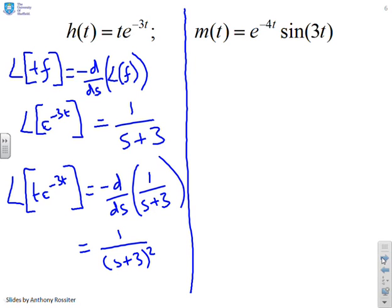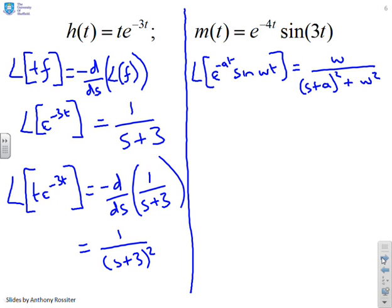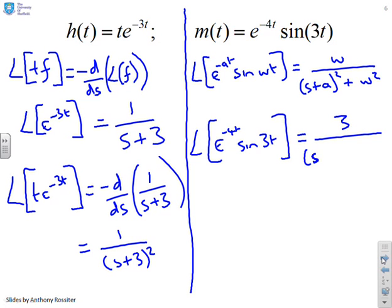What about the next example then? Now you'll notice that we have Laplace of e to the minus at sine omega t gives you omega over (s plus a) squared plus omega squared. So that's what the table gives us and now all I need to do is recognize that in this case a is 4 and omega is 3. So Laplace of e to the minus 4t sine of 3t has got to be equal to 3 over (s plus 4) squared plus 3 squared. Now you might want to expand that out. Often it's best to leave it in that form because it tells you that it comes from an exponential times a sine. But just in case you wanted to you'll see this gives you 3 over s squared plus 8s plus 25.